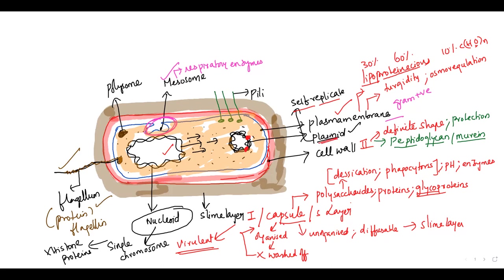What else is present in the cytoplasm? You're going to have lots of reserved food materials — whatever the bacteria stores, including lots of sugars, proteins, lipids, and different sorts of ions.